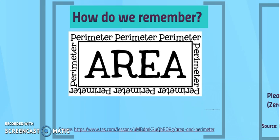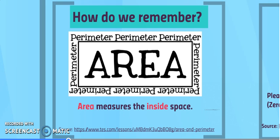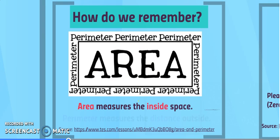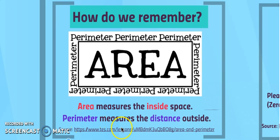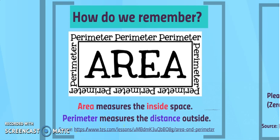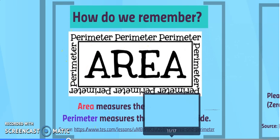The perimeter is talking about this line right here for this rectangle — this is what perimeter is, and it's talking about the outside of the rectangle. Area measures the inside, because you see the word area in here, but perimeter measures the distance outside. That's why you see the word perimeter on the side.